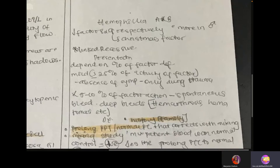Haemophilia A is a decrease in factor 8 and Haemophilia B is a decrease in factor 9, which is also known as the Christmas factor. Haemophilia is mostly found in men because it is X-linked recessive, in contrast with ITP which is mostly found in women. In Haemophilia, men are mostly affected and women are carriers.